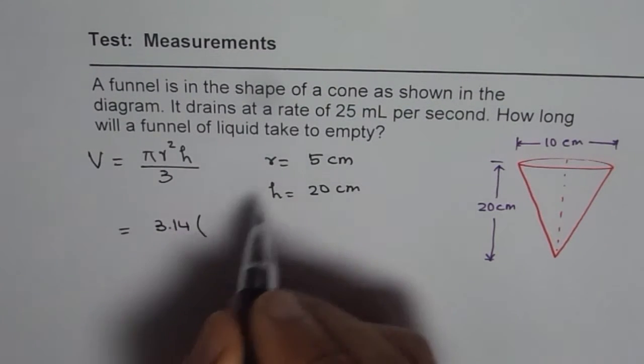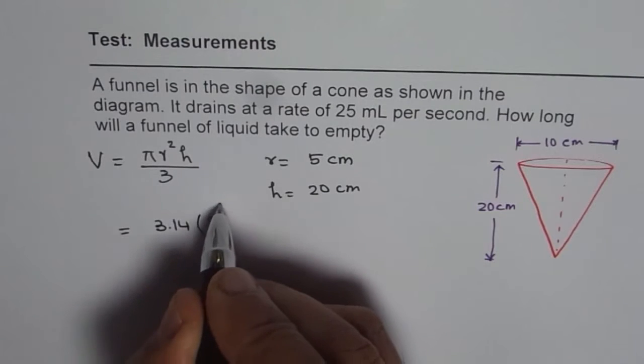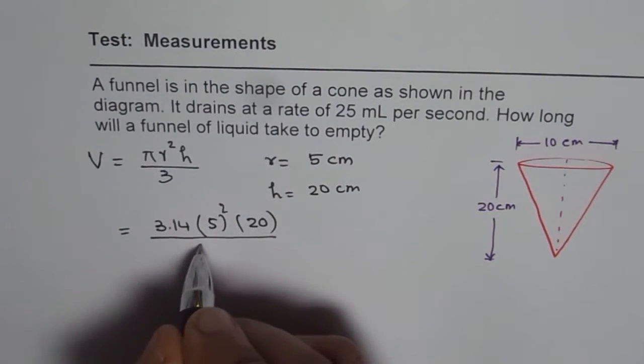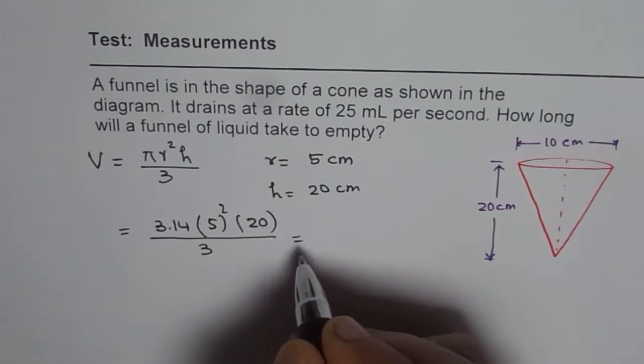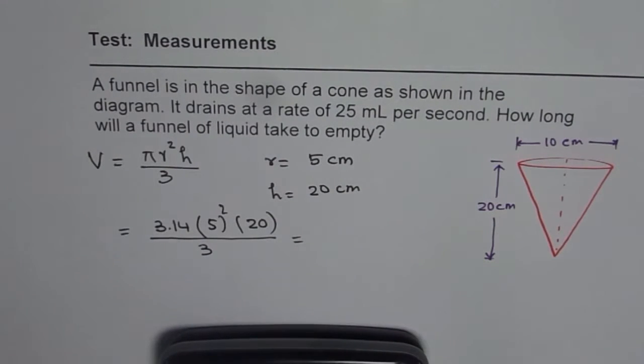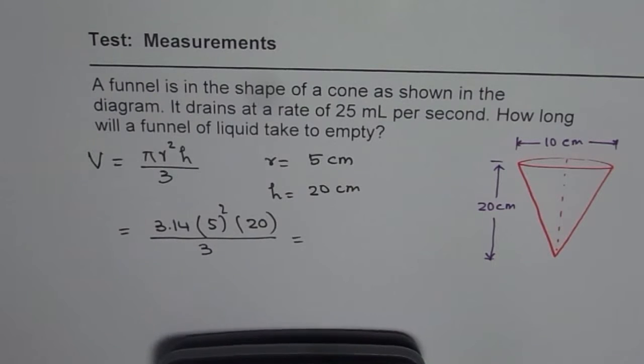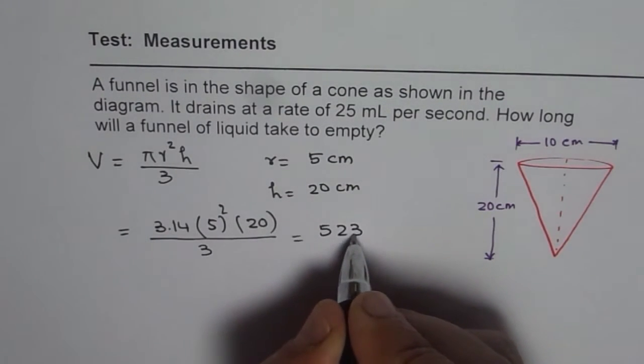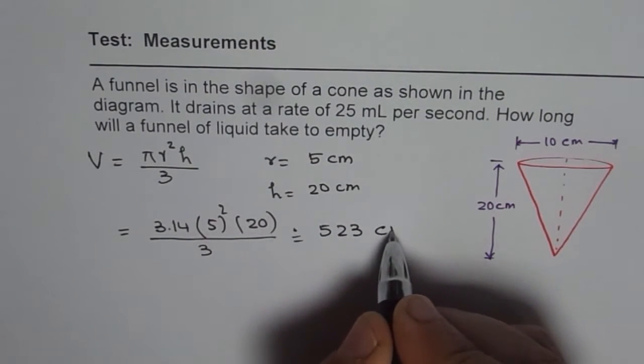I'm just writing 3.14 times r is 5 squared and height is 20 divided by 3. So we can do it with calculator now. So we have 3.14 times 5 squared is 25 times 20 divided by 3. It is 523.3 so we can write this as approximately 523 cm³.